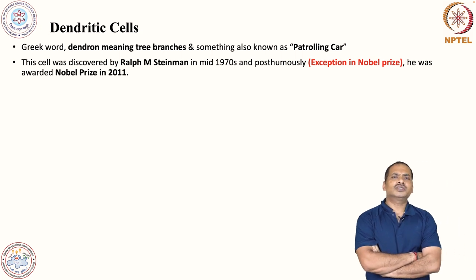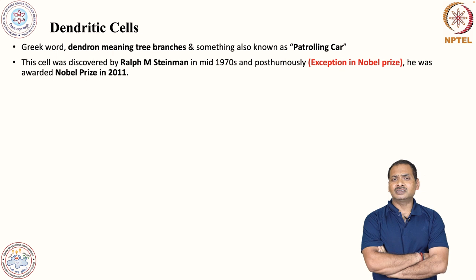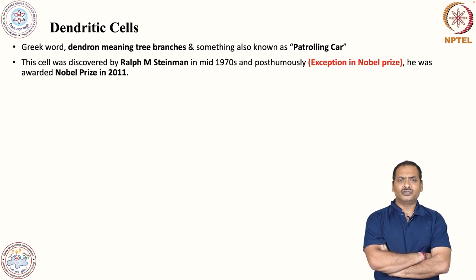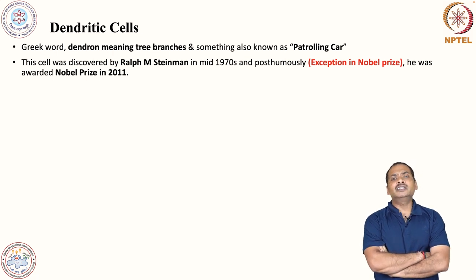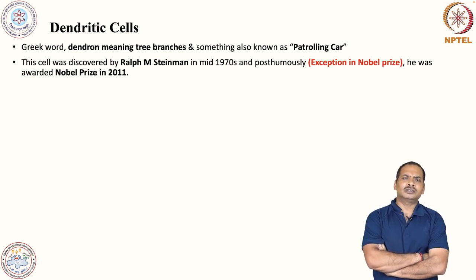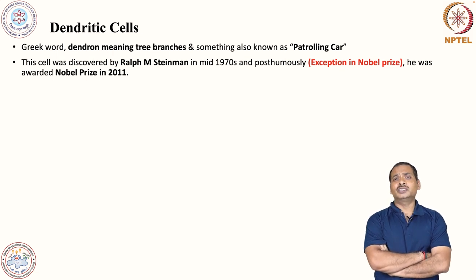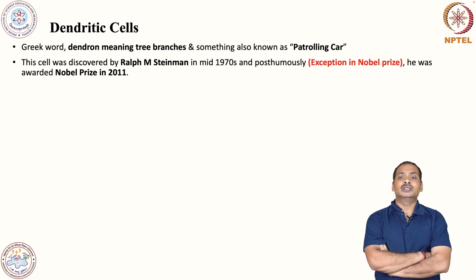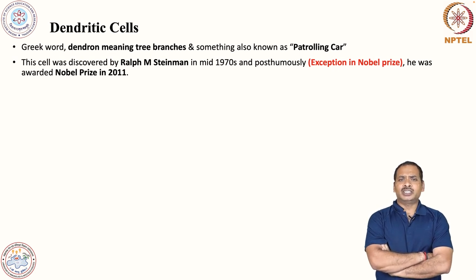This cell was first discovered in the mid-1970s, around 1973, by a very talented scientist named Ralph M. Steinman. He was also initially confused after looking at its structure. He characterized these cells throughout his life and tried to use them for various therapies. For this remarkable work, he was awarded the Nobel Prize — and there is an unfortunate story associated with it, as it was the first time the Nobel Prize was given posthumously.